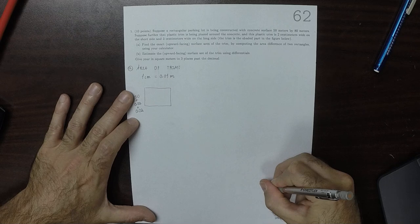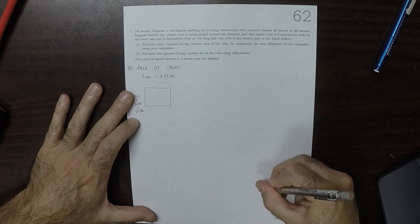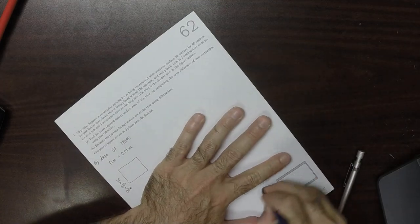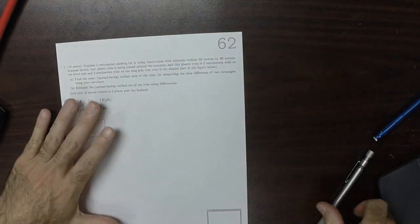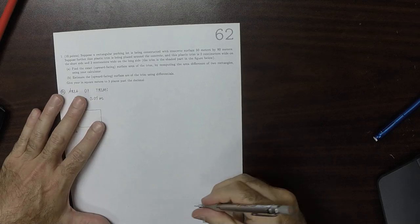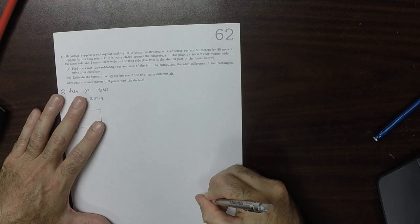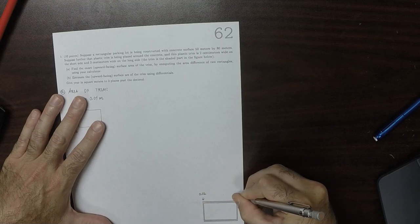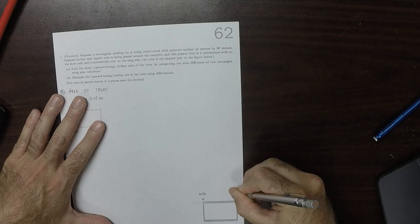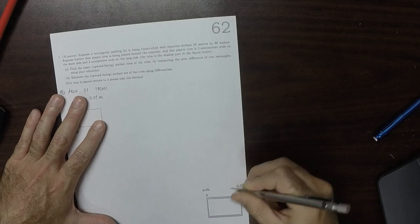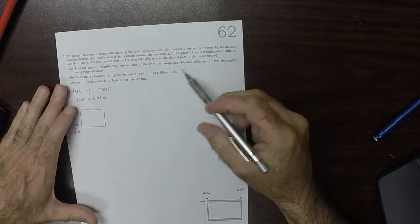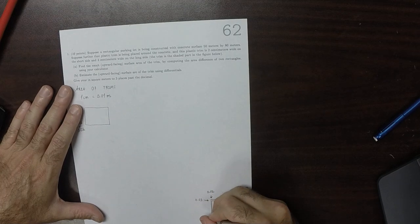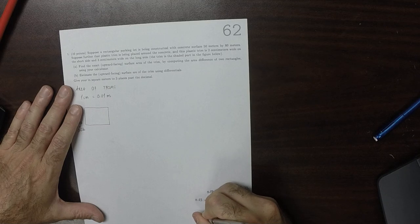So this is, in the picture here, this is 0.02. This little distance right here is 0.02. And then we've got another 0.02. And here it says 3 centimeters, so that's 0.03. And another 0.03.